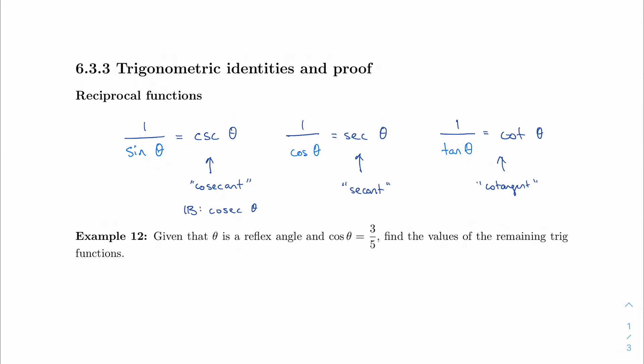And now we have six trig functions. We have sine, cosine, tangent, and we have their reciprocals, cosecant, secant, and cotangent.